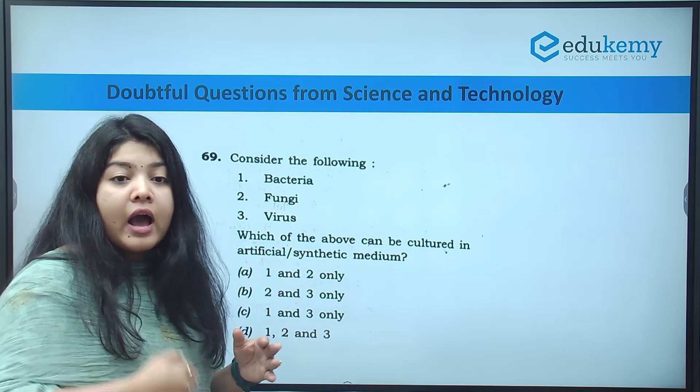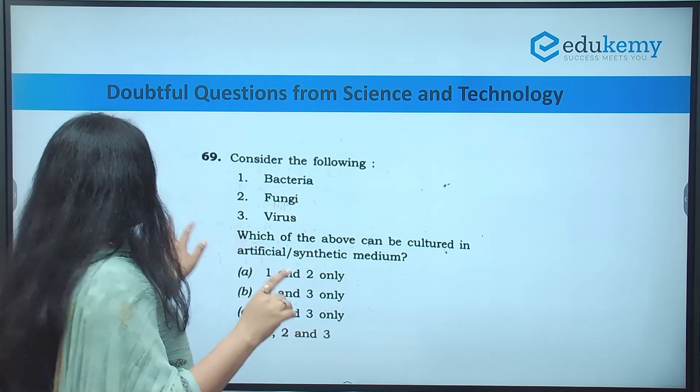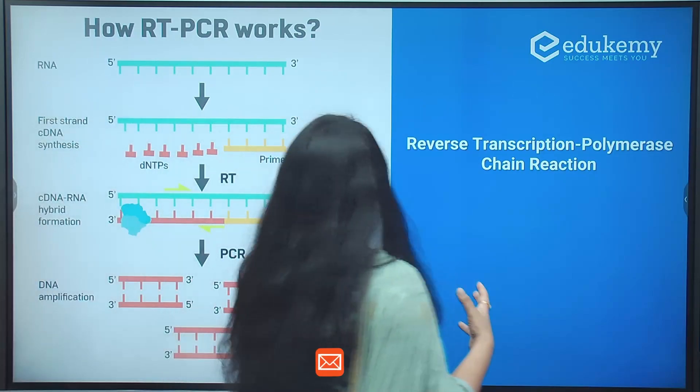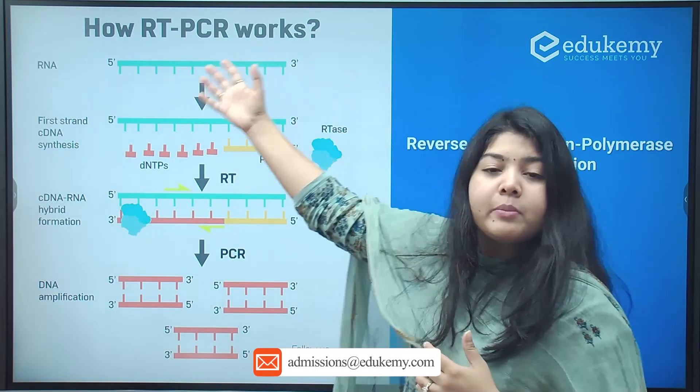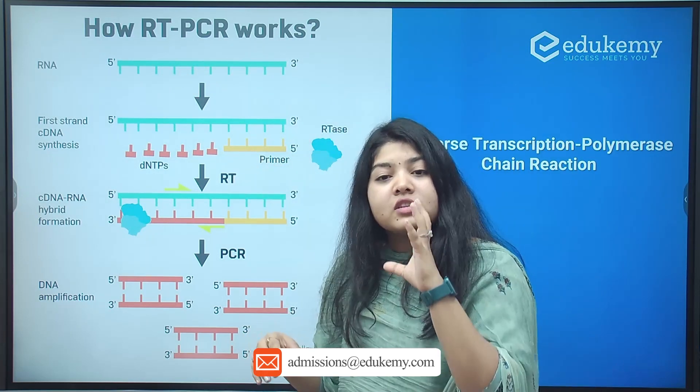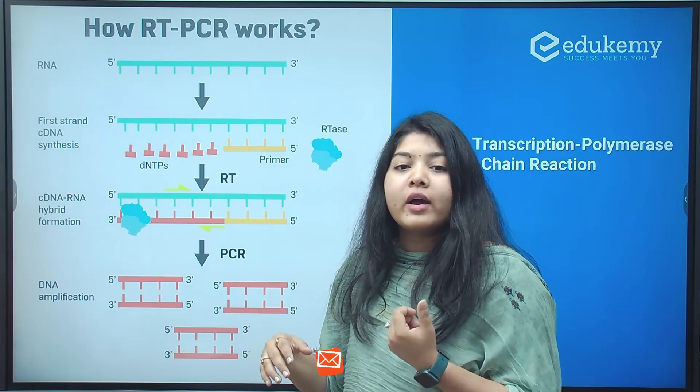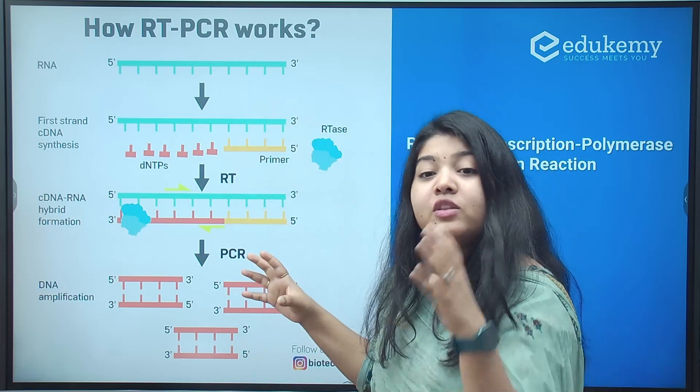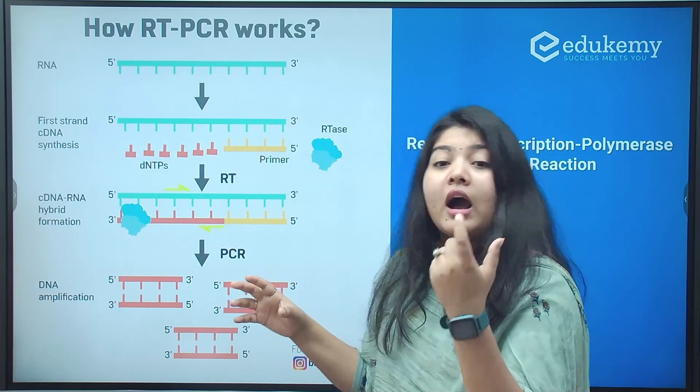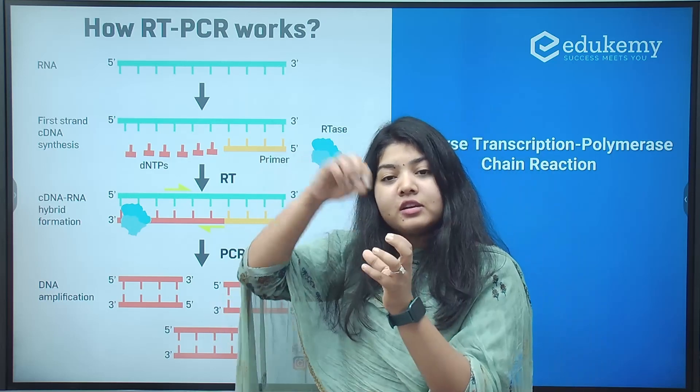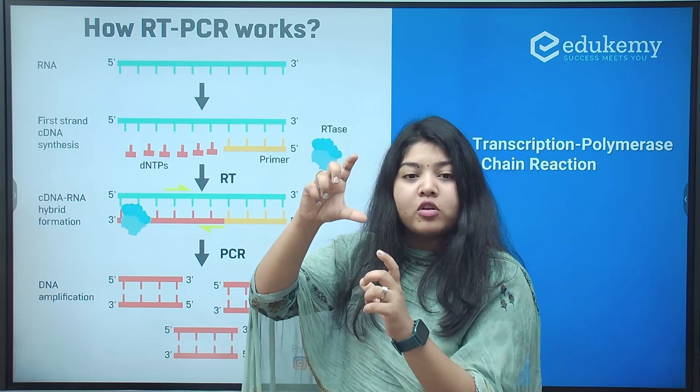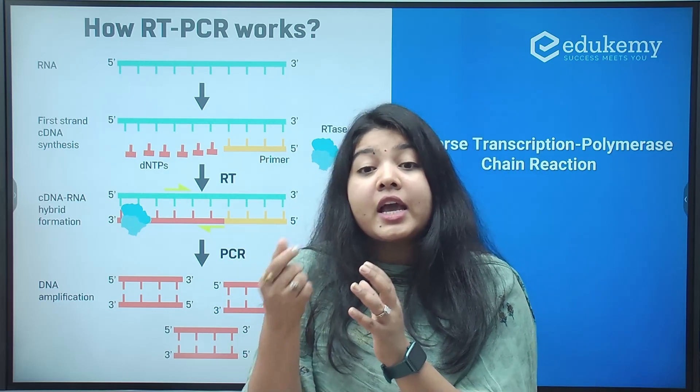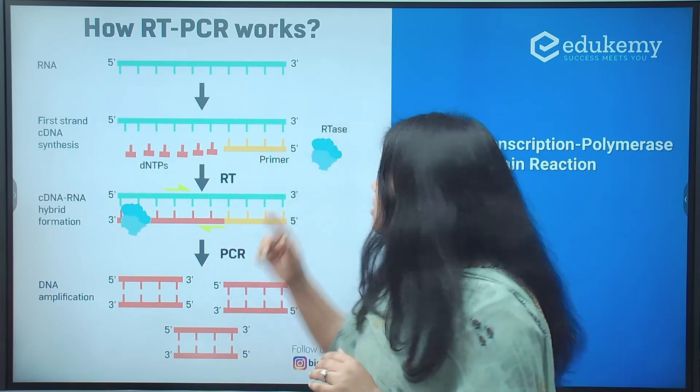And we also know that viruses need a living host in order to survive and grow. Now where did the discrepancy come when students thought then how RT-PCR works? Because we are taking the swabs which has virus in it, which is COVID virus, and how it is actually being working if the viruses cannot culture in the artificial medium?